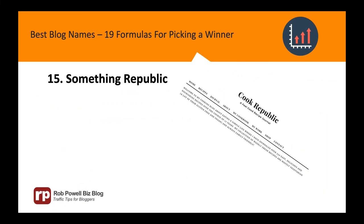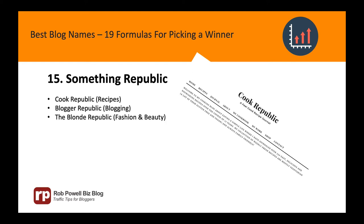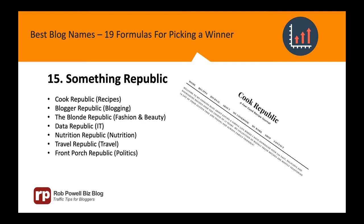Formula 15: Something Republic. Including the word 'Republic' in your blog name implies that you have a very specific audience who see themselves as distinct from the rest of the world. It's a good way to identify with followers in a particular niche. Here are some examples: Cook Republic, Blogger Republic, The Blonde Republic, Data Republic, Nutrition Republic, Travel Republic, and Front Porch Republic.